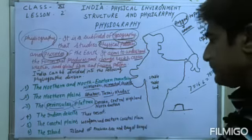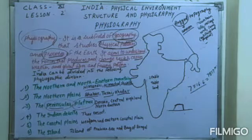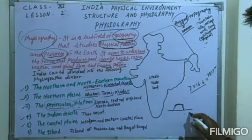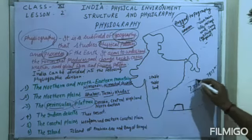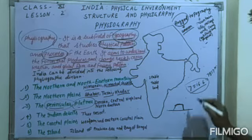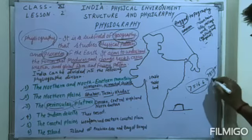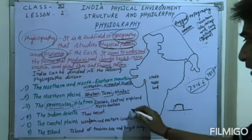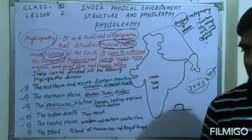The final division is the Indian Islands. There are two types of islands — one group in the Arabian Sea and another group in the Bay of Bengal. The total length of the Indian coastal area is approximately 7,516.6 kilometers, nearly 7,517 kilometers, including the islands of the Arabian Sea and the Bay of Bengal.